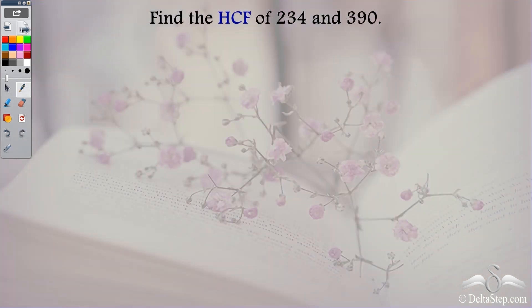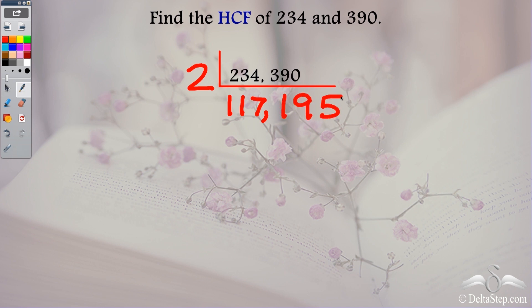Now can you find the HCF of 234 and 390 using this method? So first I need to write it like this. And then divide by the lowest common prime factor which is 2 because both the numbers are even. 234 divided by 2 is 117 the quotient. 390 divided by 2 gives me 195. So you actually need to divide and find these quotient. Now do I need to divide by 2 again? No because both the numbers are odd numbers.